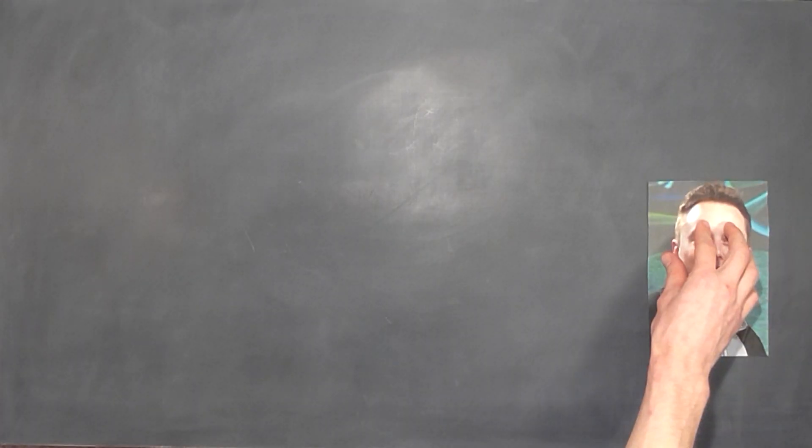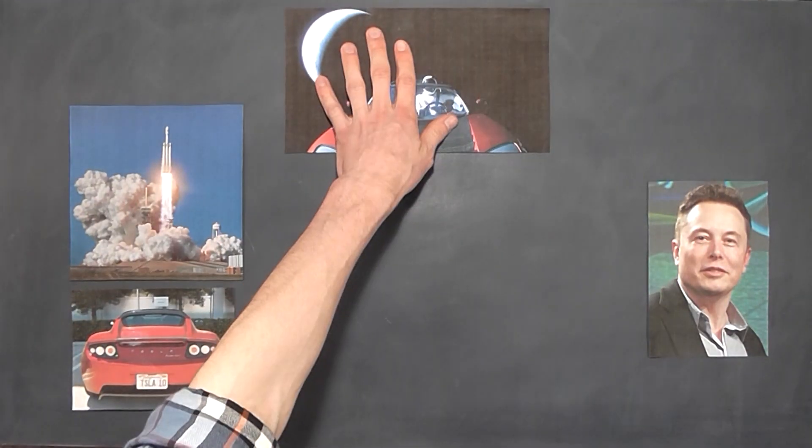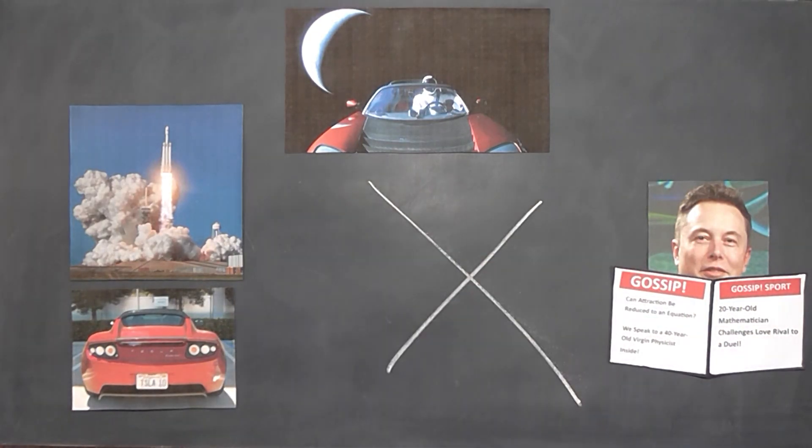I mean, Elon Musk didn't launch an electric car into space by reading gossip magazines. Surely, by now, evolution should have iterated our minds to heavily favor logic and critical thinking. Well, no.